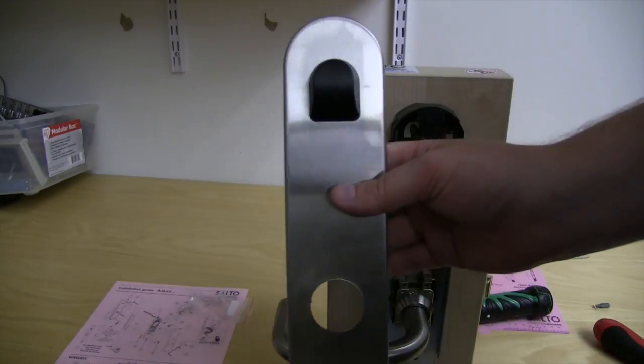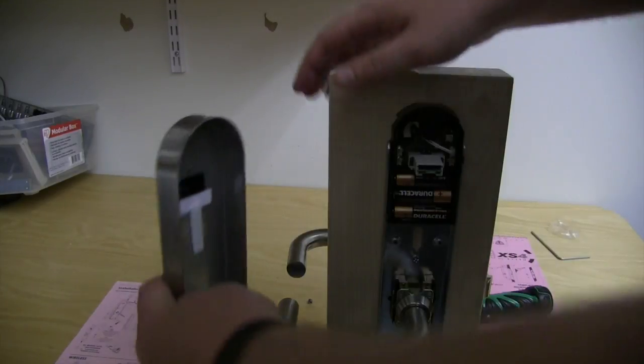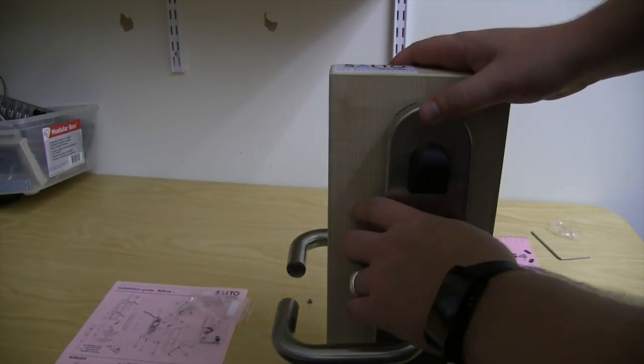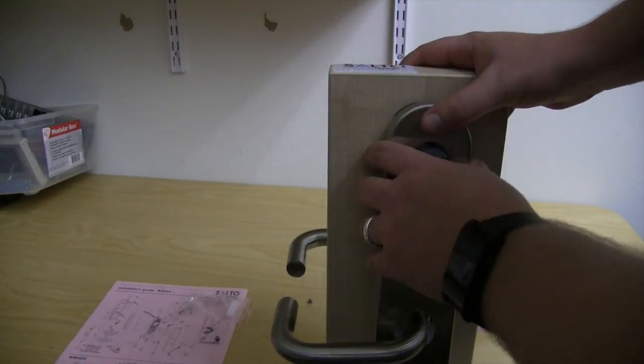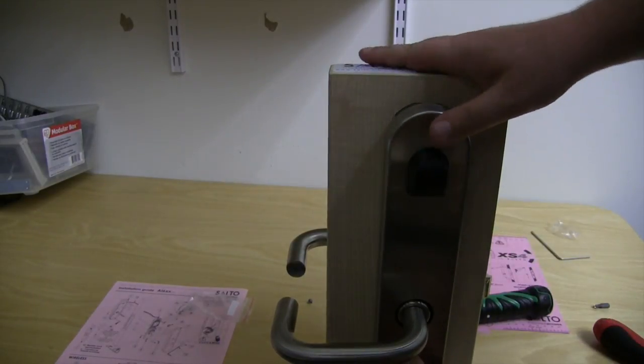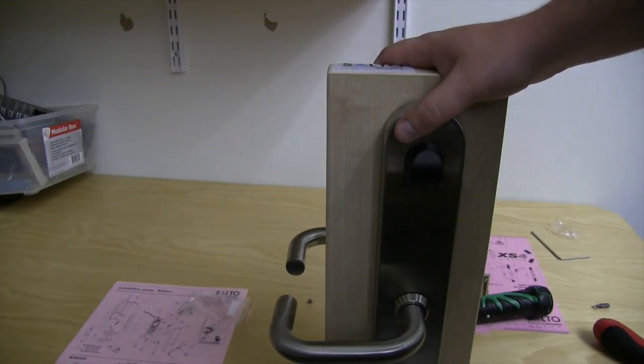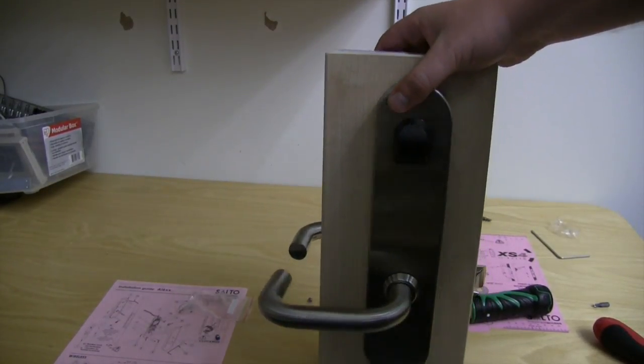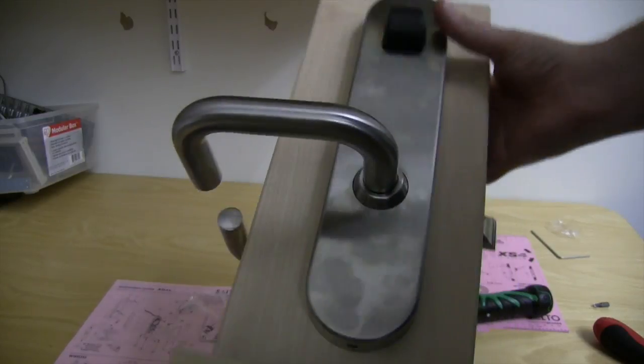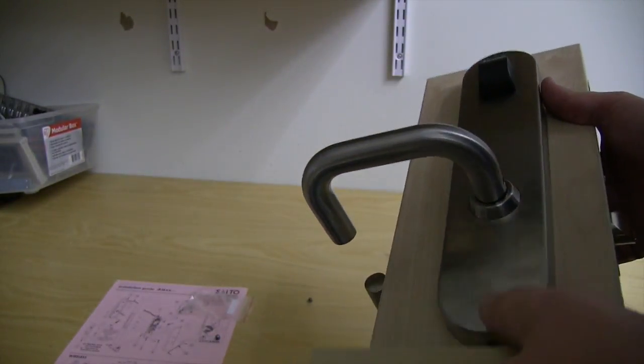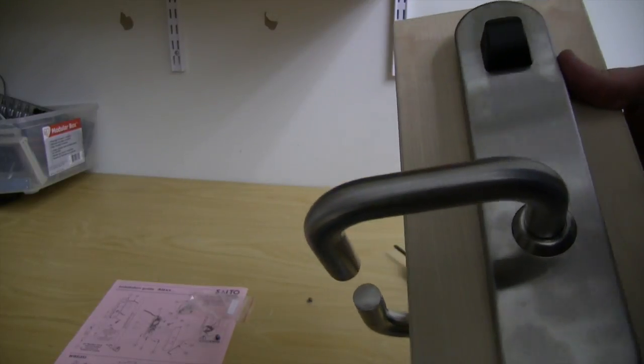Just put on that back plate. Over the handle. Clip it on top first. And pop it on on the bottom. This part is going to be a little bit hard to see with this panel, but it's much easier on an actual door.